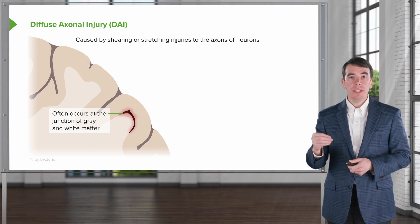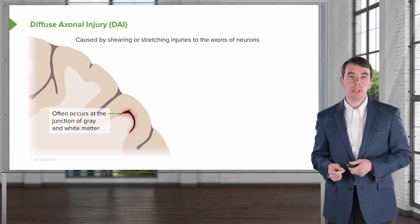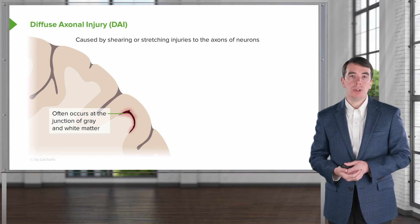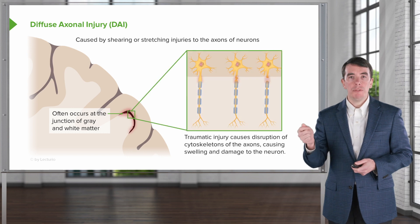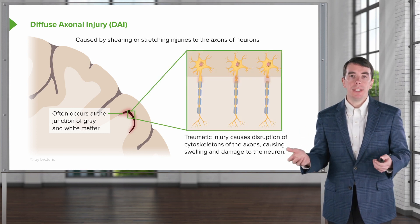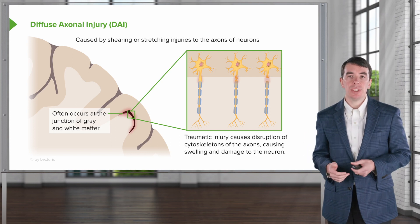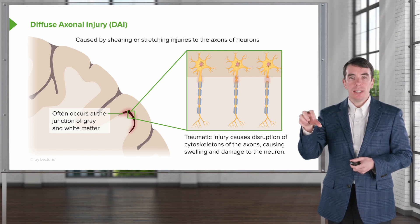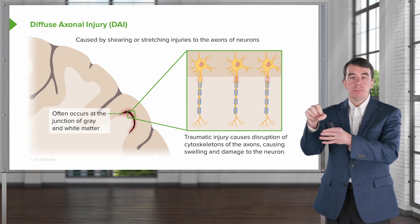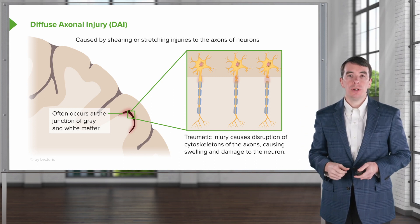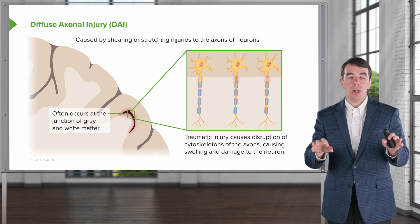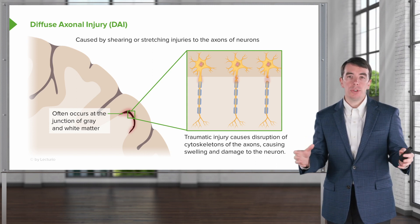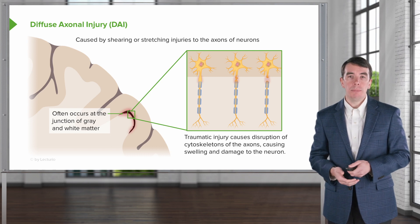We often see evidence of diffuse axonal injury at the gray-white junction, that area between the gray and white matter, which is an area of potential stretch of the neurons. Traumatic injury causes disruption of the cytoskeleton of the axons in those areas — the cell bodies are anchored in the cortex and the axons move — resulting in a shearing injury that can lead to axonal swelling and neuronal damage. Diffuse axonal injury on imaging is indicative of a wider spread and more diffuse injury to the brain broadly.